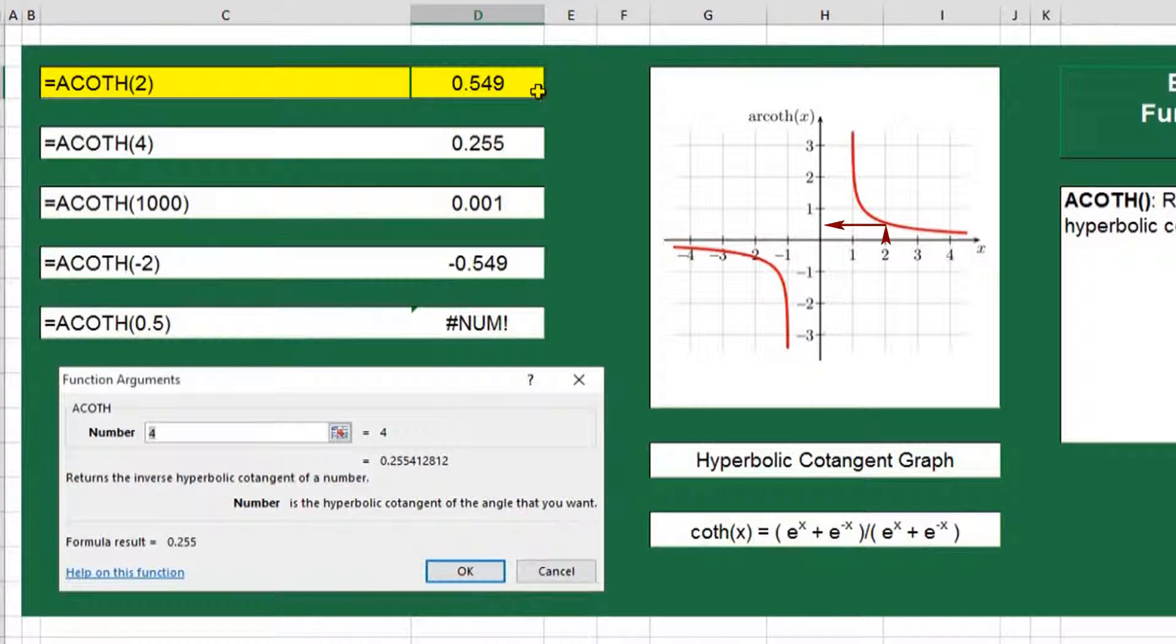Let's find the ACOTH of 2. To do that we'll work our way along the x coordinates until we find where the line intersects the number 2. Then we work our way up to see that 0.549 is the returned value on the y coordinate.